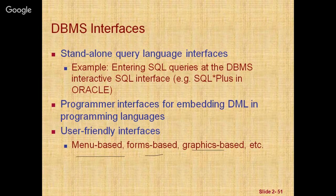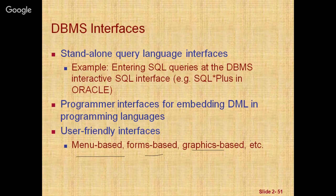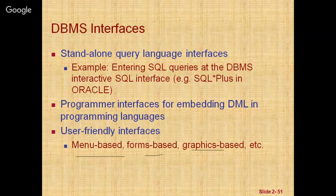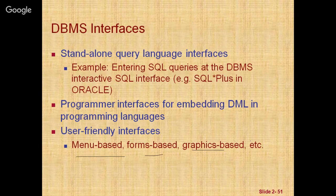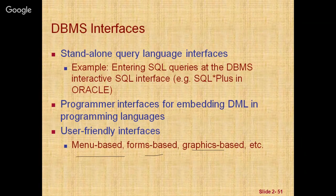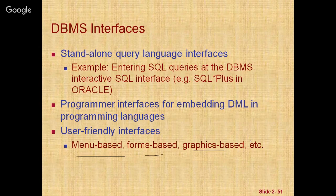Form-based interfaces display a form to each user who fills out form entries to insert new data, or fills out only certain entries, in which case the DBMS retrieves matching data for the remaining entries. For example, when filling the examination form on K2 Challenge, you fill in your name and address, then search for the department, and the system populates related fields like Directorate of Technical Education and Board of Technical Examination.